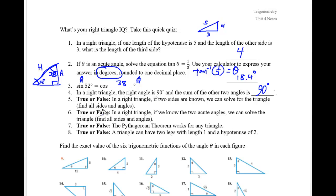True or false: in a right triangle, if two sides are known, then we can solve for all sides and all angles. That is absolutely true. To find the missing third side when given two sides, we use the Pythagorean theorem. Then we use inverse functions to find the angle measurements inside the right triangle.